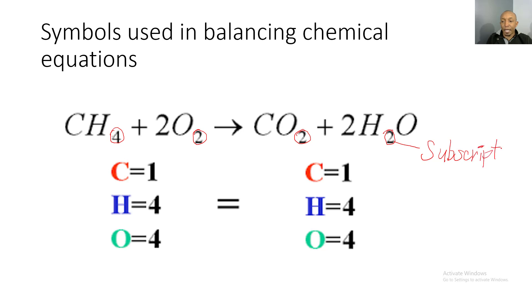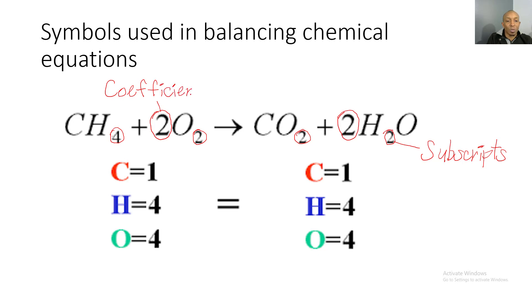Subscripts tell you how many you have of each element. The numbers up top are called coefficients. Coefficients are the numbers that you can change in order to balance your chemical equations. You cannot change your subscripts to balance a chemical equation — the only numbers you can change are your coefficients, the numbers up top.